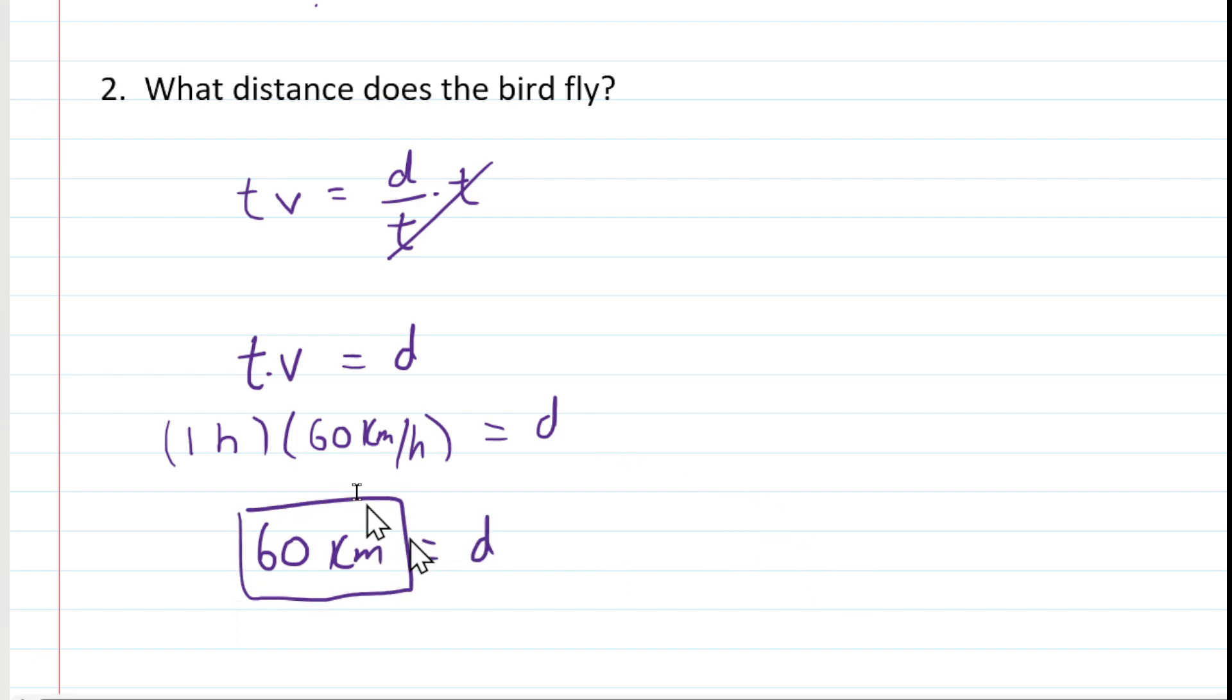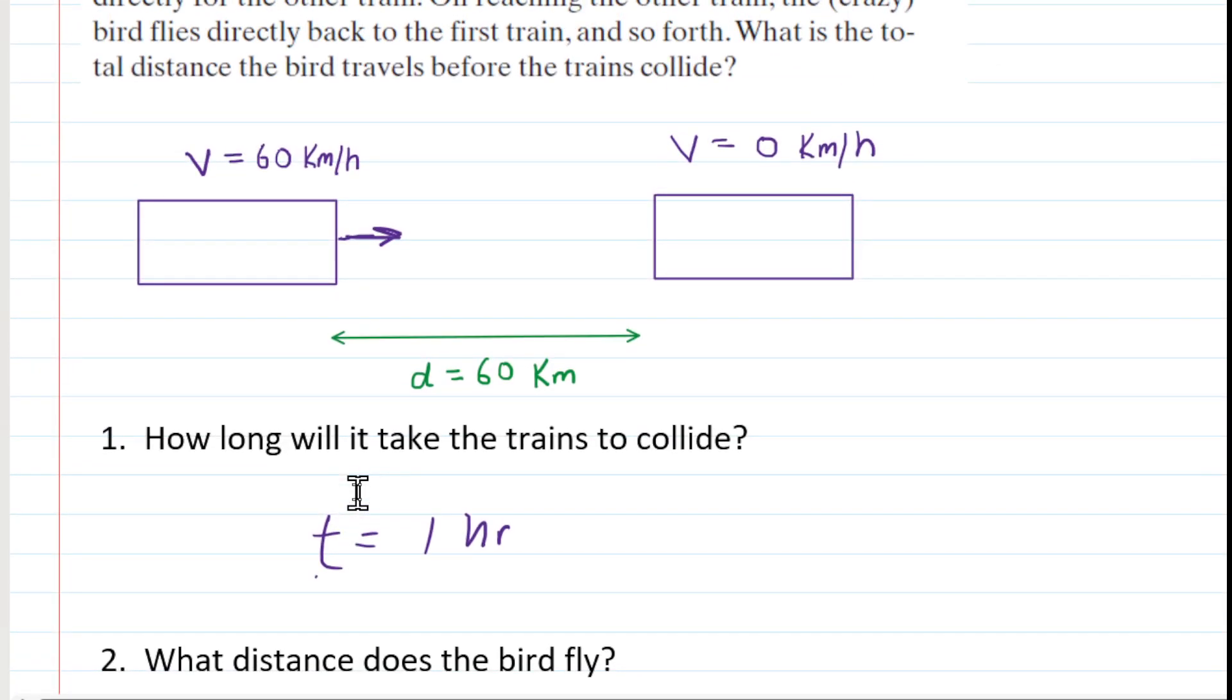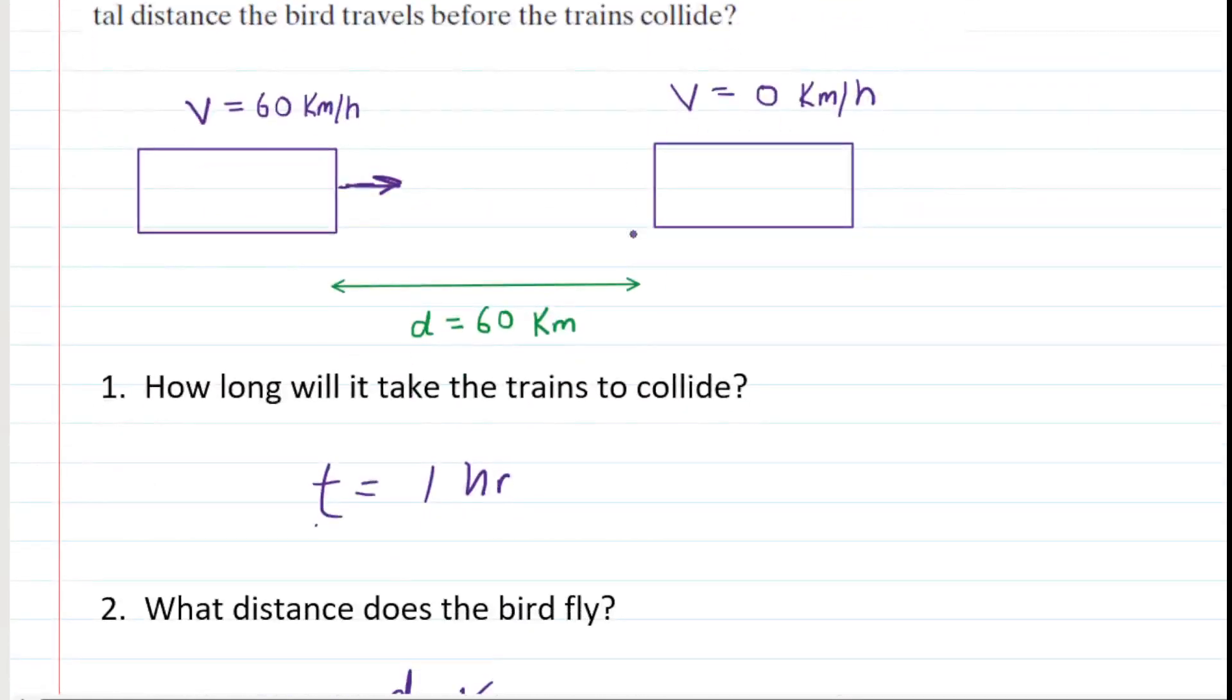So again, maybe a take-home message of the problem is that you can reframe the problem when two objects are traveling towards one another. If they're traveling towards one another at 30 kilometers per hour, as they did in the original picture, then you can actually just assume one train is stationary and the other train is traveling at the combined speed. So 30 plus 30 would be the 60 kilometers per hour.